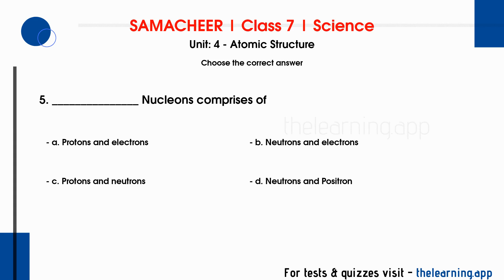Question 5: Dash — nucleons comprises of. Options are: A. Protons and electrons, B. Neutrons and electrons, C. Protons and neutrons, D. Neutrons and positron. Correct answer is C. Protons and neutrons.